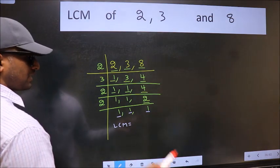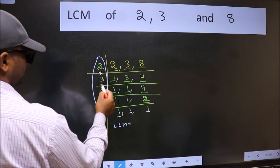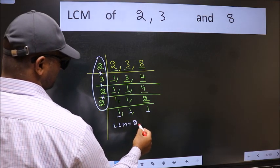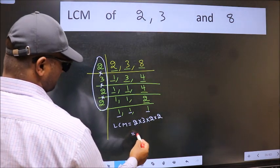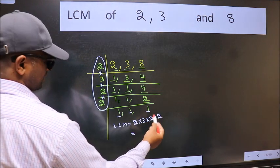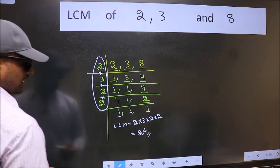LCM is the product of these numbers. That is 2 into 3 into 2 into 2. When we multiply these numbers, we get 24 is our LCM.